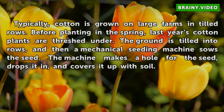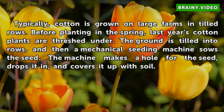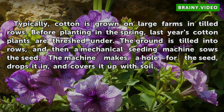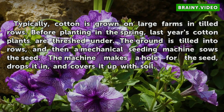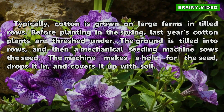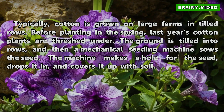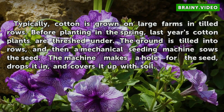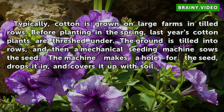Typically, cotton is grown on large farms in tilled rows. Before planting in the spring, last year's cotton plants are threshed under. The ground is tilled into rows, and then a mechanical seeding machine sows the seed. The machine makes a hole for the seed, drops it in, and covers it up with soil.